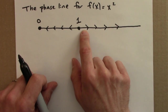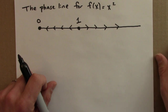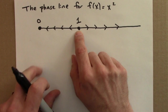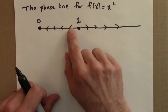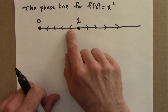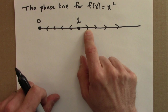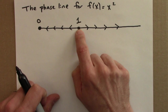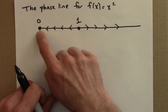If I start anywhere greater than 1, I'll move to the right forever — I'll get larger and larger. If I start anywhere between 0 and 1, I'll move to the left and get closer and closer to 0. We say that orbits in here approach 0. Orbits greater than 1 tend towards infinity, or grow without bound, or diverge. The points 1 and 0 are fixed points — they stay put.